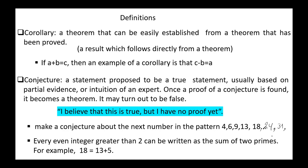Another example of a conjecture: every even integer greater than 2 can be written as the sum of two primes. For example, 18 equals 13 plus 5. This is not a theorem since it is not proven yet.